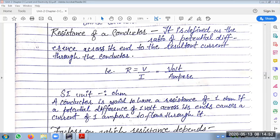A conductor is said to have a resistance of 1 ohm if a potential difference of 1 volt across its ends causes a current of 1 ampere to flow through it.